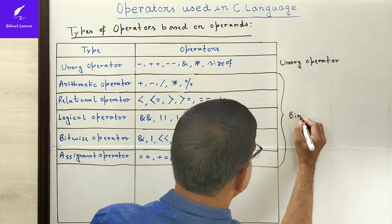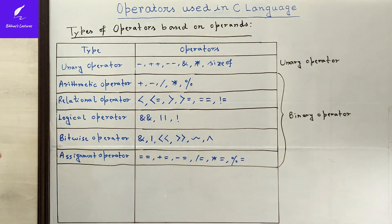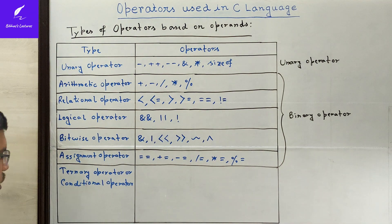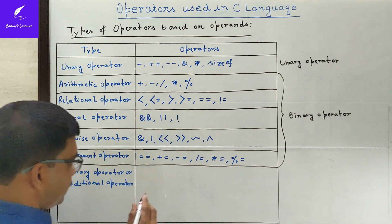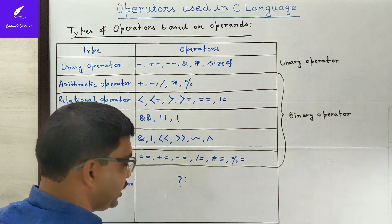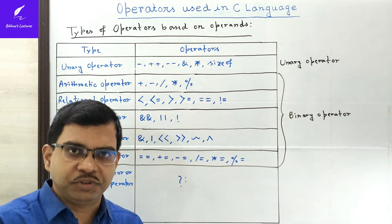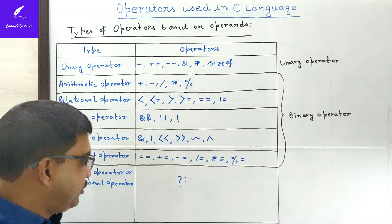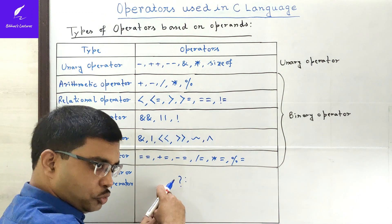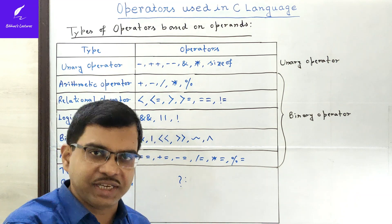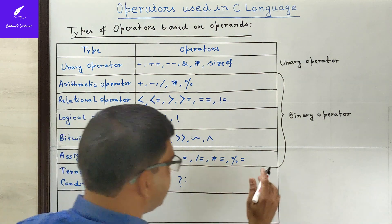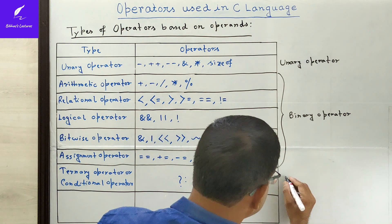The last category based on operands is the ternary operator, also called the conditional operator. Its symbol is question mark and colon (? :). 'Ternary' means three — so three operands are needed. The first operand is the condition; if the condition is true the first expression executes, and if false the second expression executes. We will discuss this in detail in the next video.